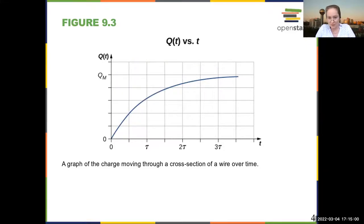The current is the derivative of the charge moving through the wire as a function of time, so the slope of this curve.